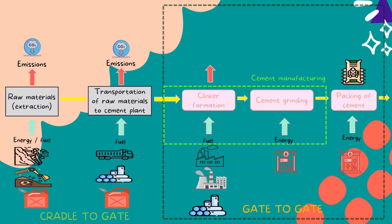The components of cement production are divided into two. First is cradle to gate, and second is gate to gate. In cradle to gate, the process involved is extraction of raw materials and transportation of raw materials to the cement plant. During this process, it involves use of energy and fuel to generate the machines, and we know that when we use machines they produce emissions such as carbon dioxide.